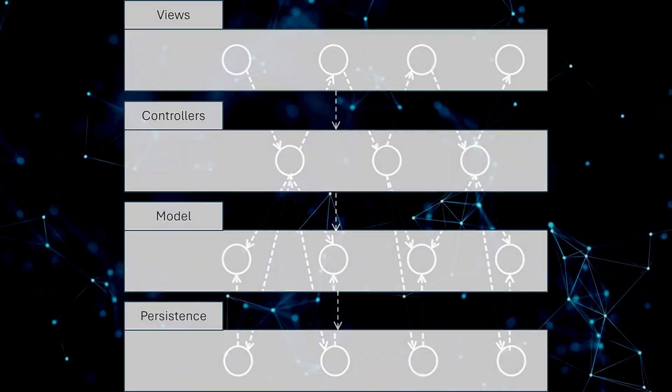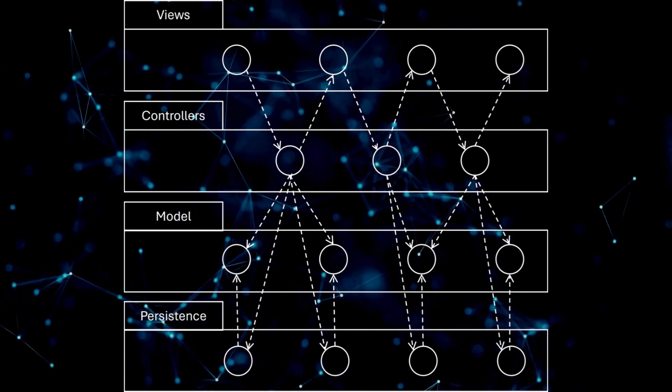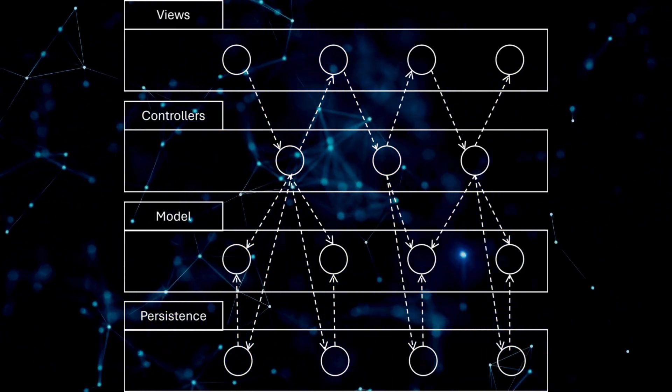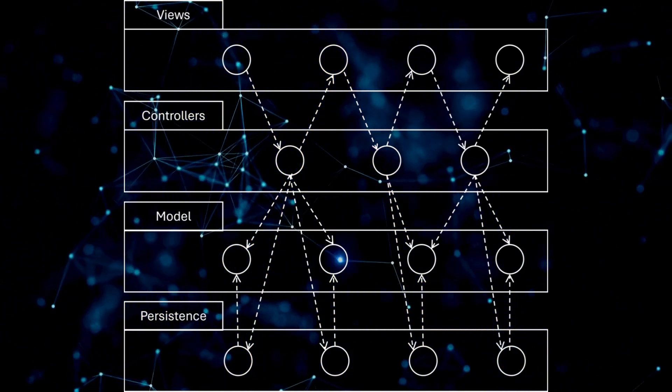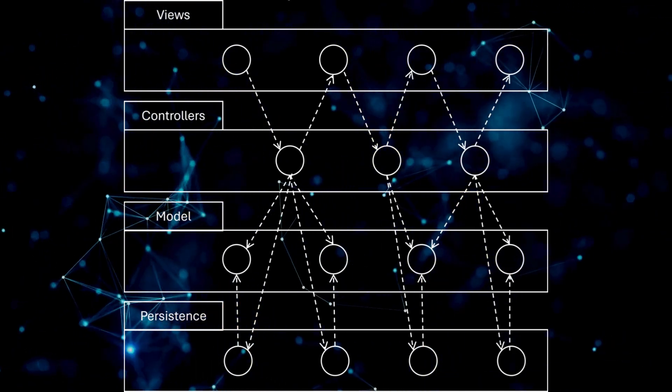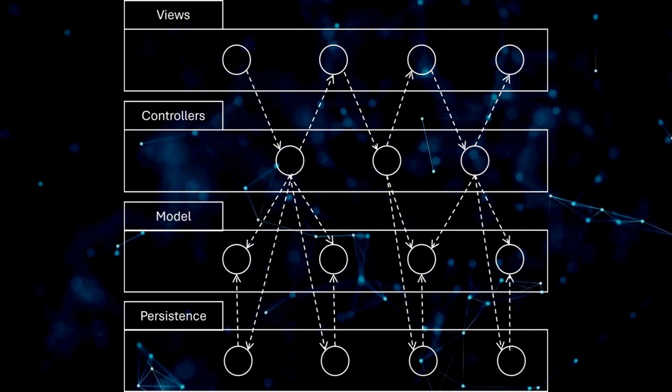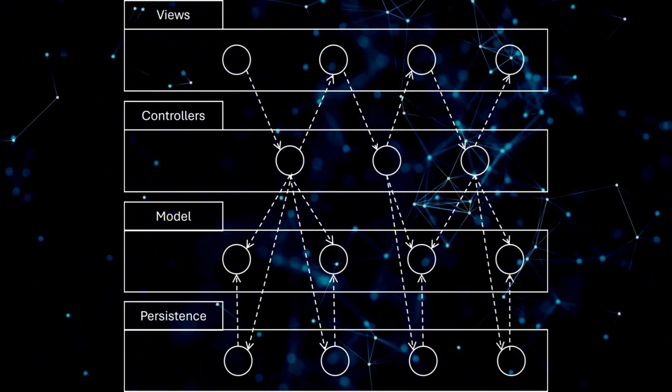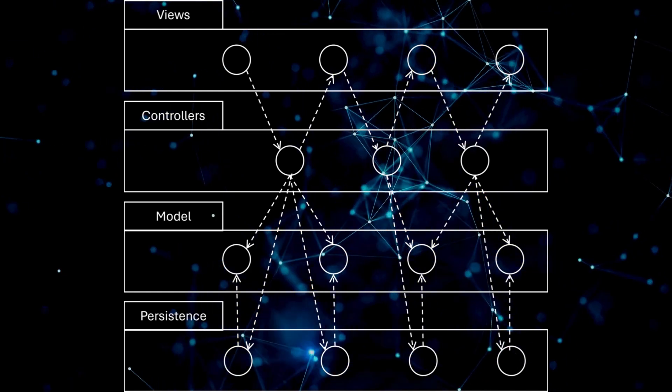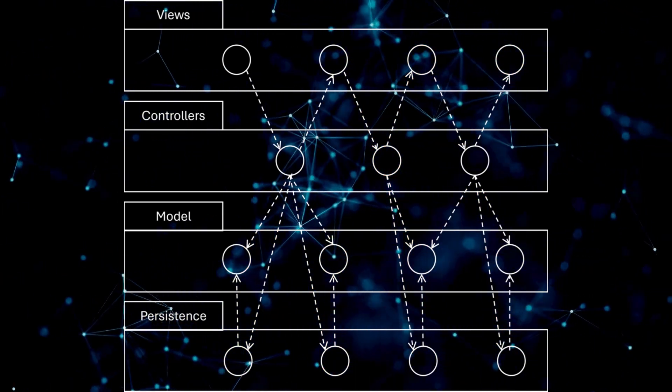But when we look at the actual dependencies between the layers, we see a different picture. The views for a particular feature use the controllers, and the controllers use the views and the model, as well as the persistence operations that go with the model. Those persistence operations use the model too.